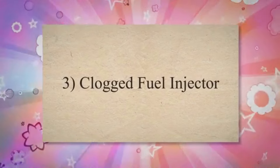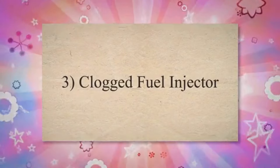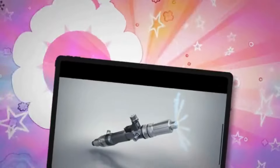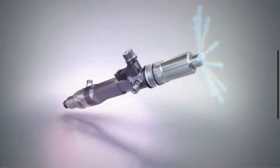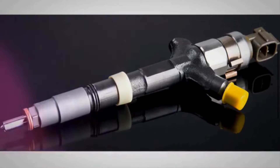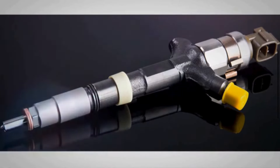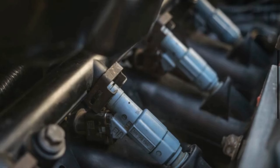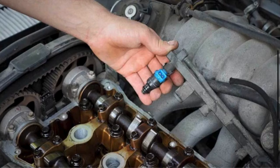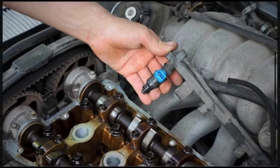3. Clogged fuel injector. Fuel injectors spray fuel into the combustion chamber. If the injector for cylinder 1 is clogged, it may not deliver the correct amount of fuel. This causes a lean or rich air-fuel mixture, resulting in a misfire and the PO301 code.